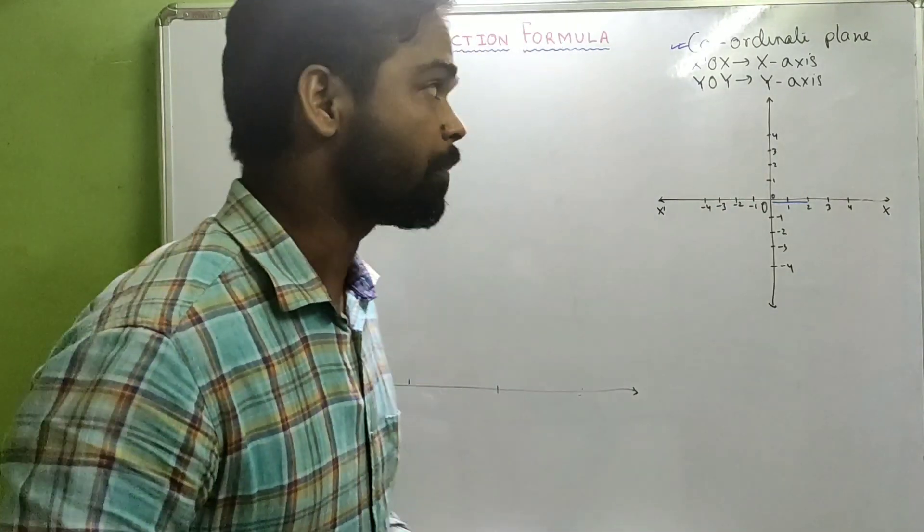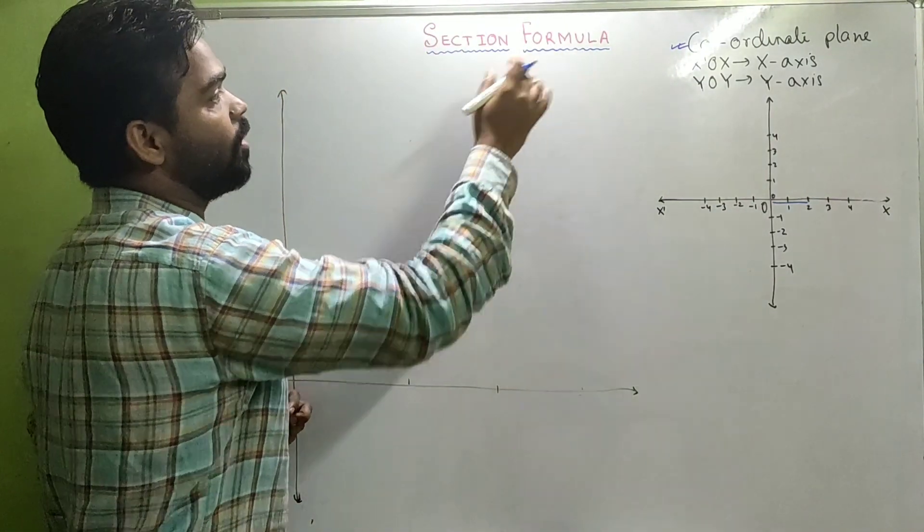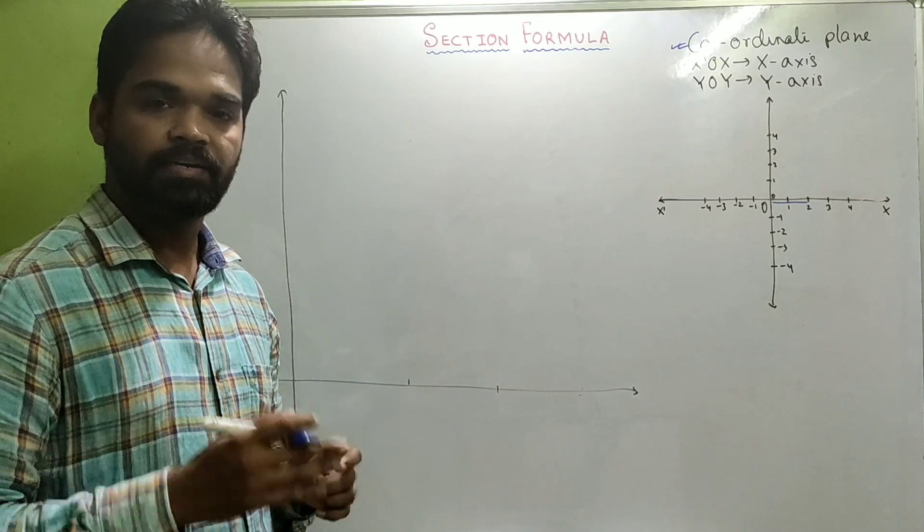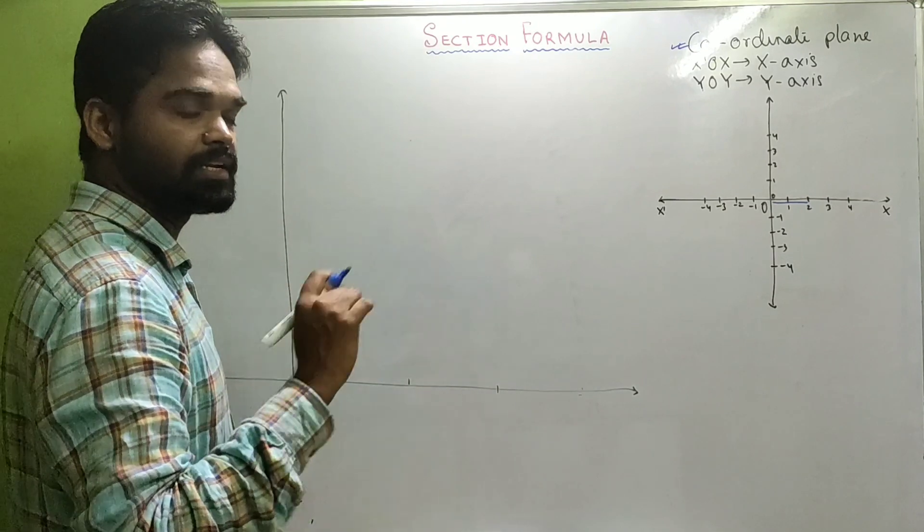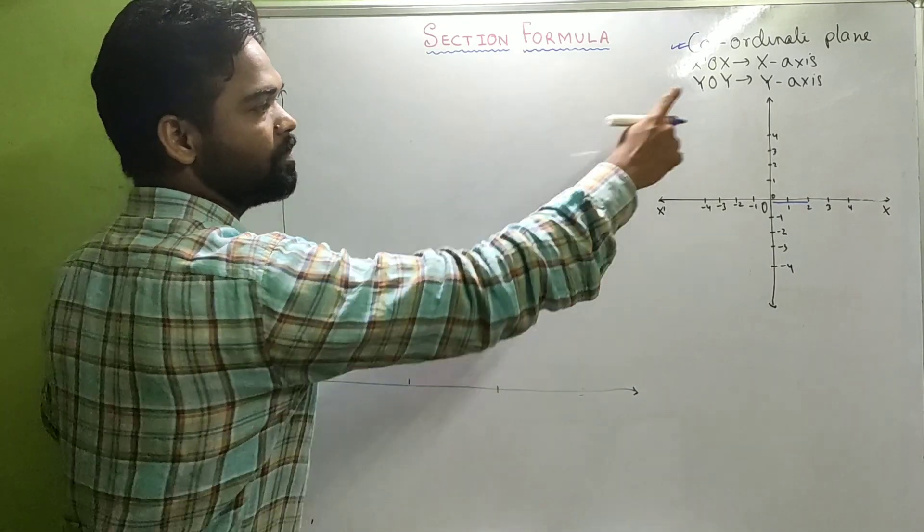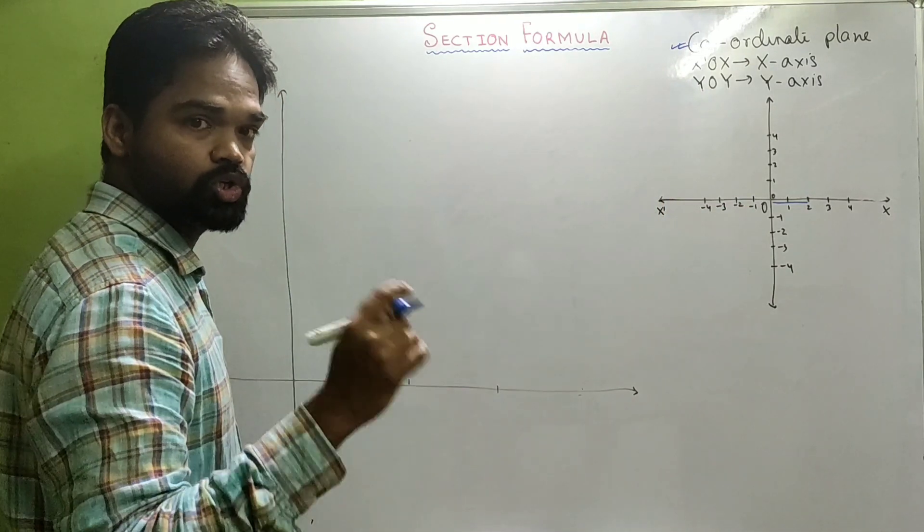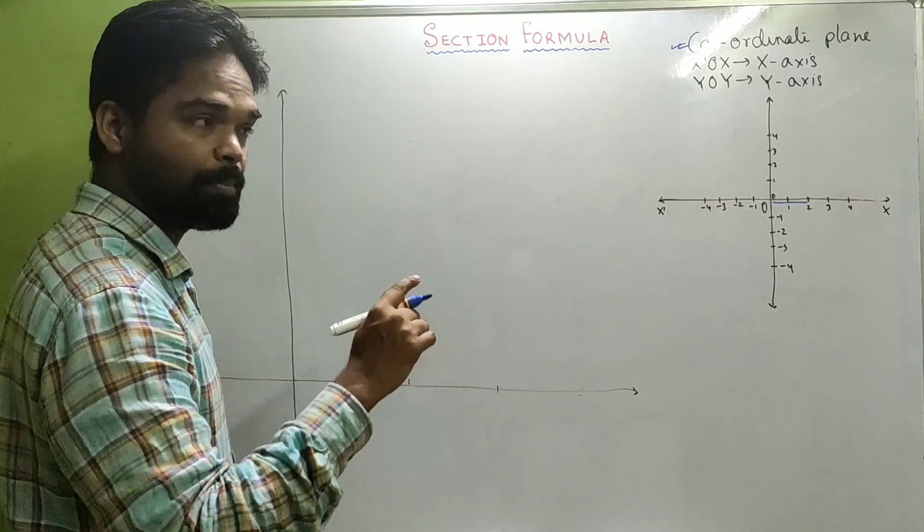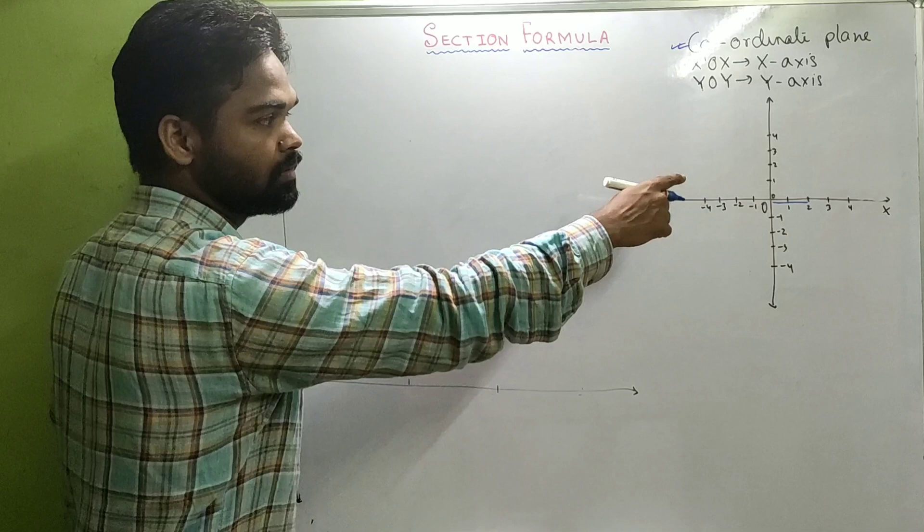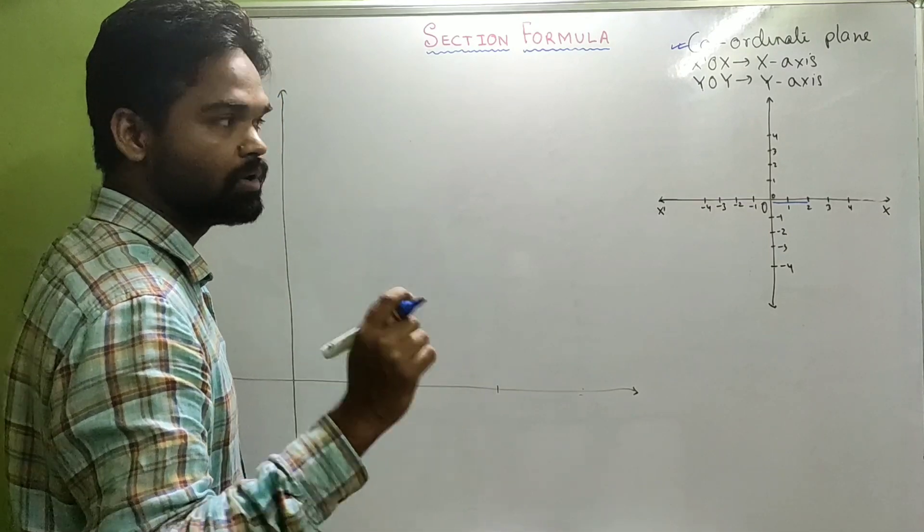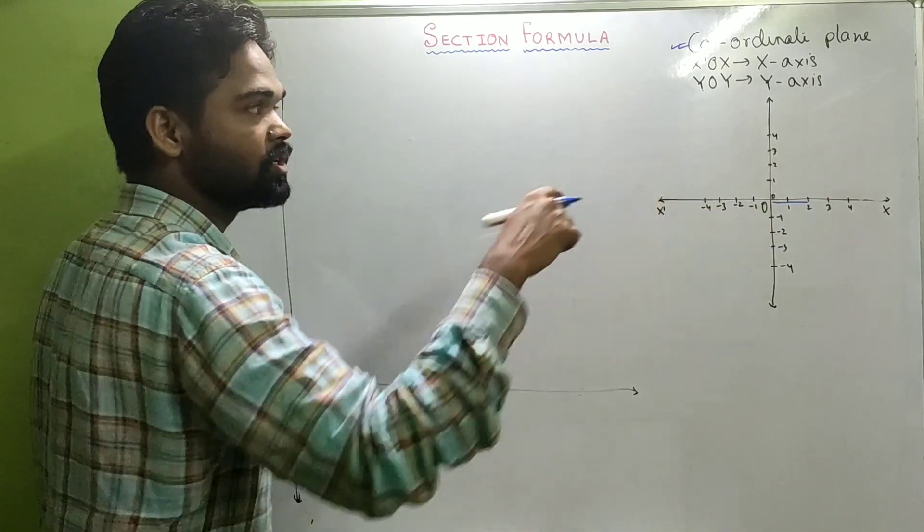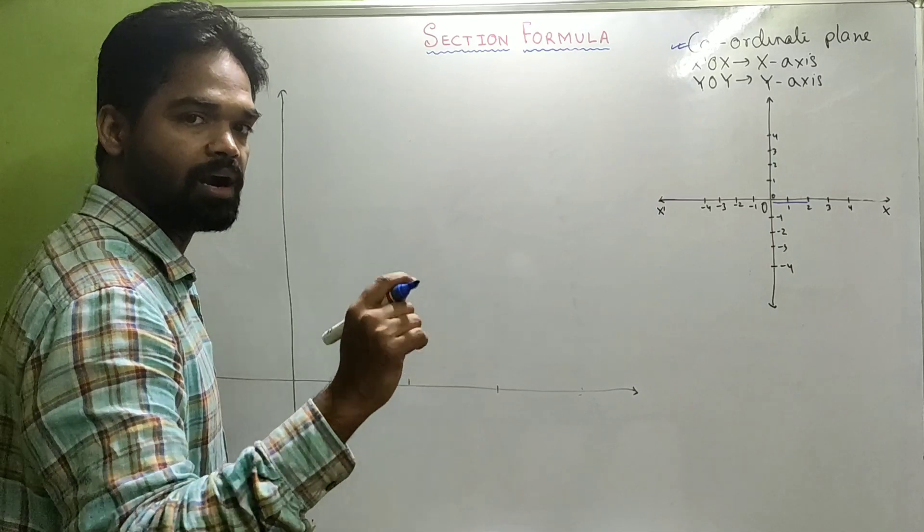Hi class, today our topic of discussion is section formula from class 10. Just have a recap of what we studied in class 9. We know that in a plane if you draw two number lines perpendicular to each other intersecting at zero, then that system is our coordinate plane or Cartesian plane.